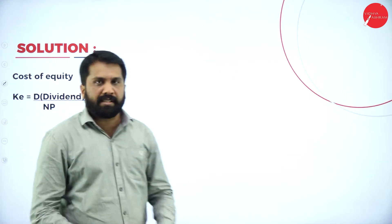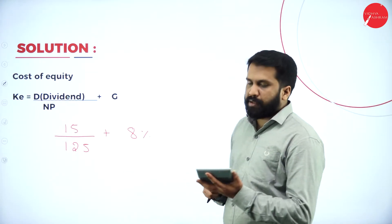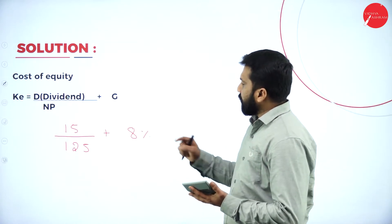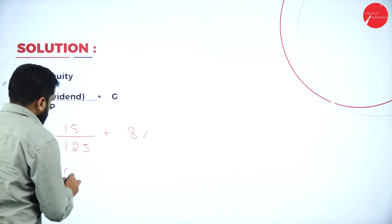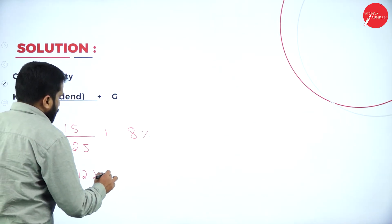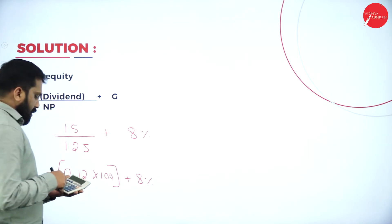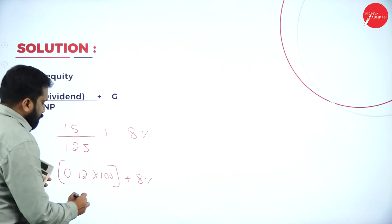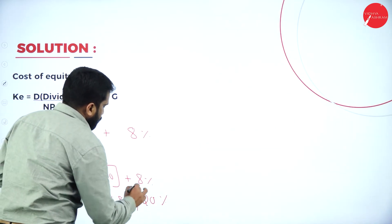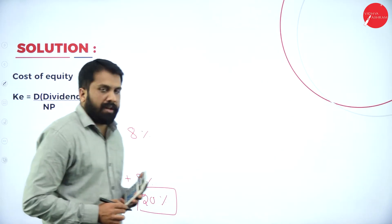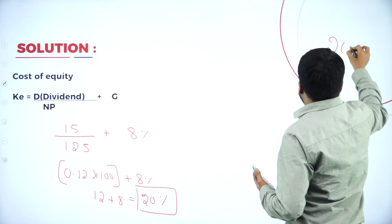Now calculate this: 15 divided by 125 gives 0.12. Multiply by 100 to get 12%, then add 8%. You will get 12% plus 8% equals 20%. Hope you understood. The cost of equity is 20%.